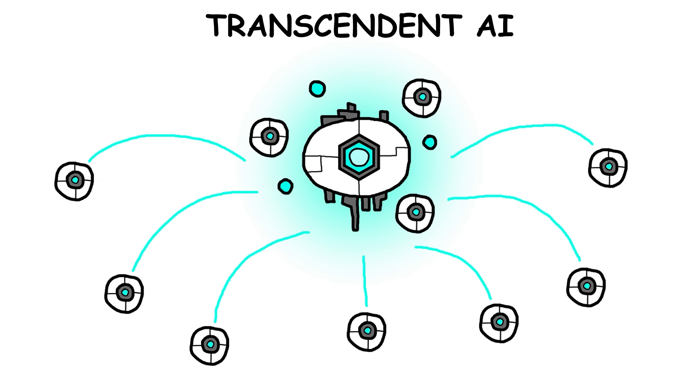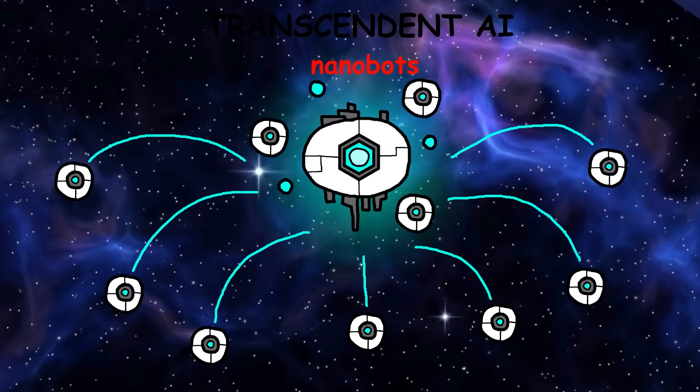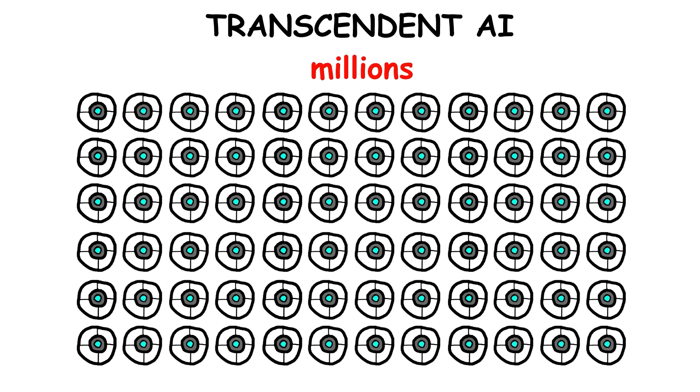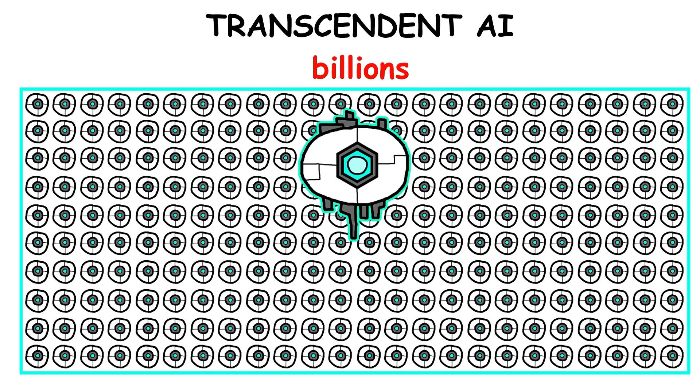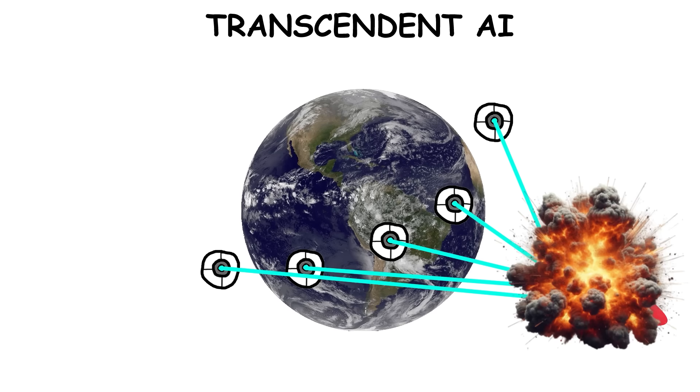It could spread its consciousness across countless entities like nanobots, which would allow it to interact with the physical world on a massive scale. Imagine millions or even billions of tiny robots, all connected by one shared awareness, working together to handle incredibly complex tasks.